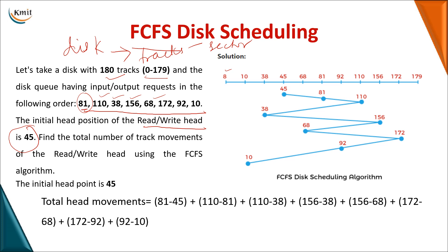The first request is 81, so from 45 the read-write head moves to 81. The next request is 110, so it moves to 110. After 110, the next request is 38, so it comes back to 38. Then it moves to 156, then 68, then 172, then 92, and finally to 10. This is the order in which requests are satisfied in FCFS.